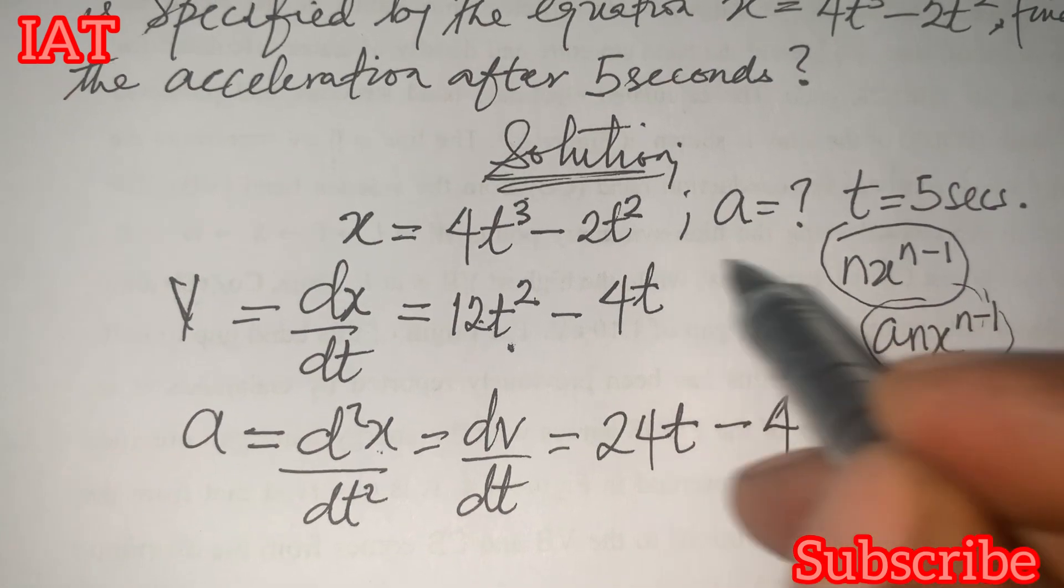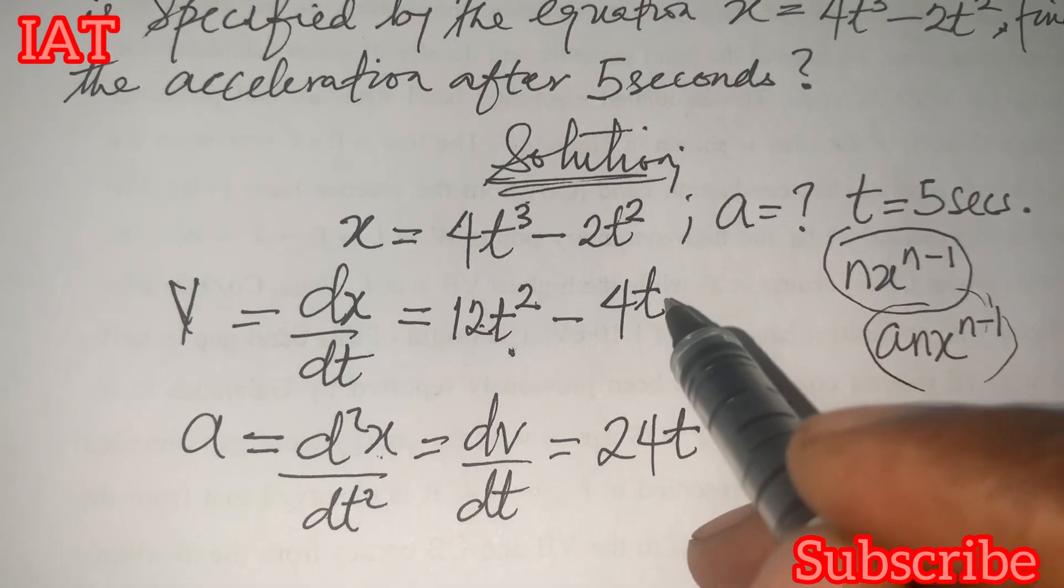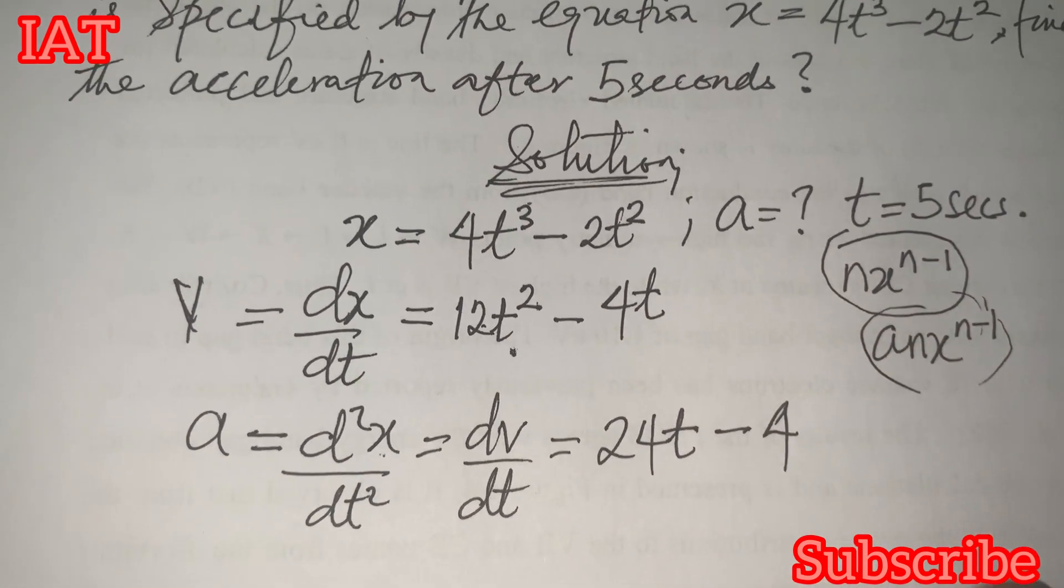The power here is 1. So, if you plug in 1 here, you notice that the result you have is 1 minus 1, 0. And anything to the power of 0 is 1. So, 4 by 1, we give you 4. Okay.